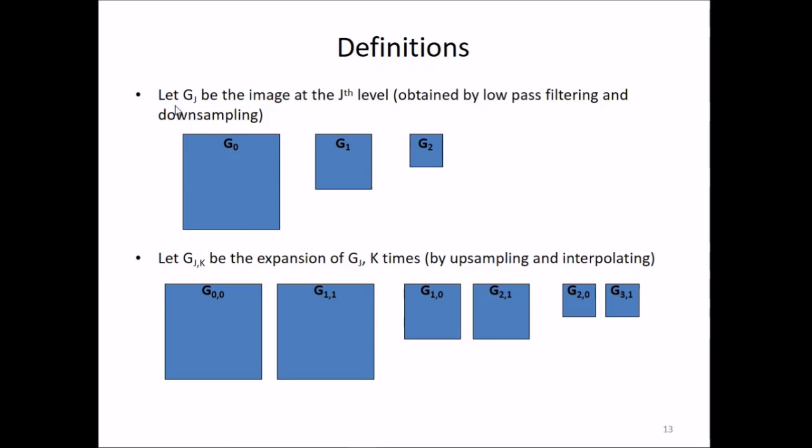Let us have some definitions. Let G_j be the image at the jth level, obtained by low pass filtering and down sampling. G_0 is one level, then G_1, then G_2. Let G_j,k be the expansion of G_j k times by up sampling and extrapolating. If I up-sample G_1 once, it becomes G_1,1. If I up-sample G_2 once, these values become G_2,1. These are various definitions.